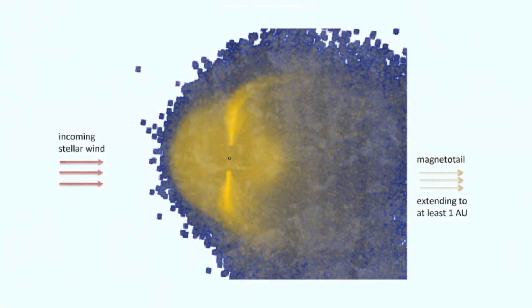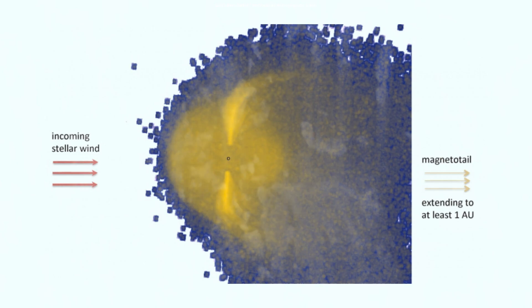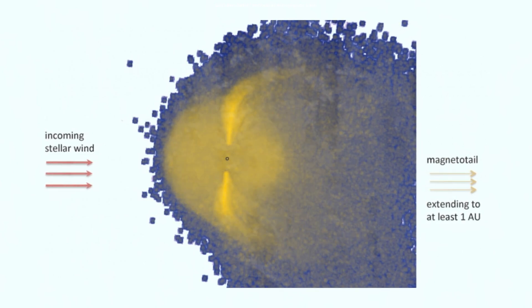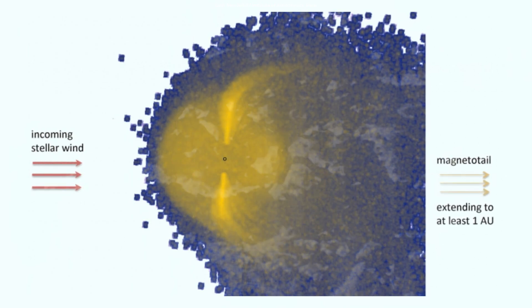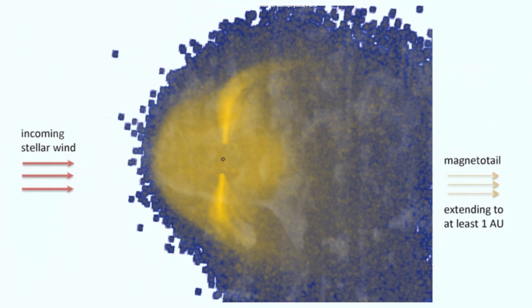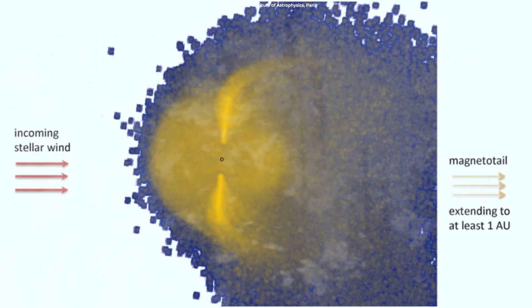The observations were made in the ultraviolet light spectrum, which is beyond the human eye's ability to see. The Hubble detected carbon ions, charged particles that interact with magnetic fields surrounding the exoplanet in the magnetosphere.